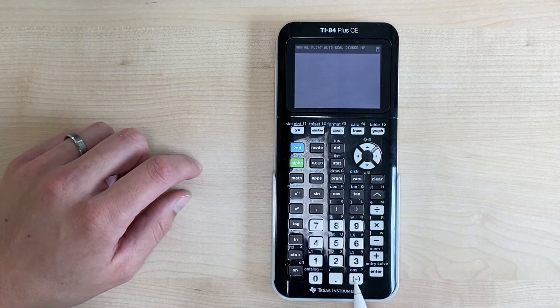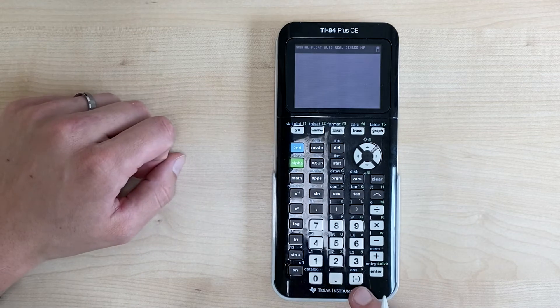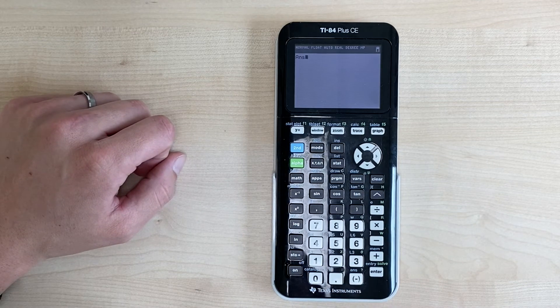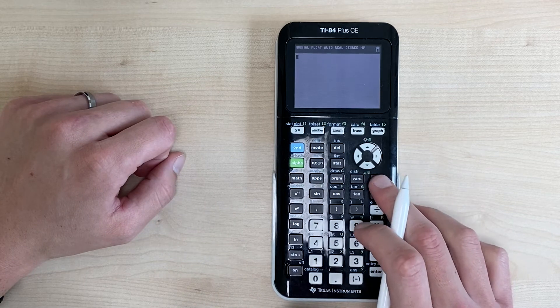So to use the previous answer you just hit second and you would hit the negative button and notice how it says ANS. So let me show you an example of how you could use this.